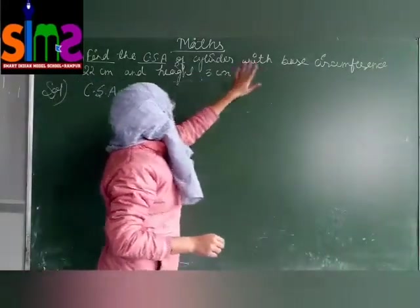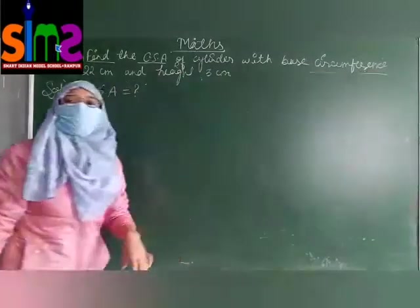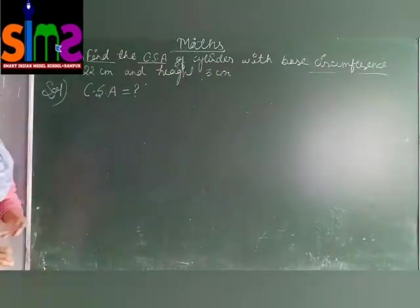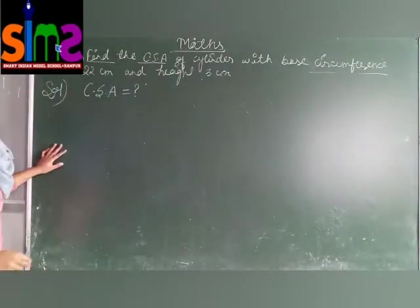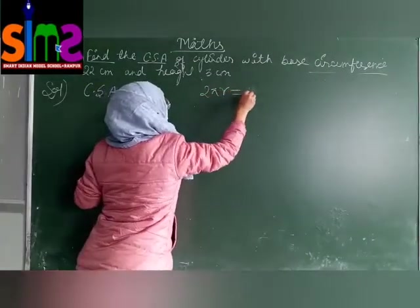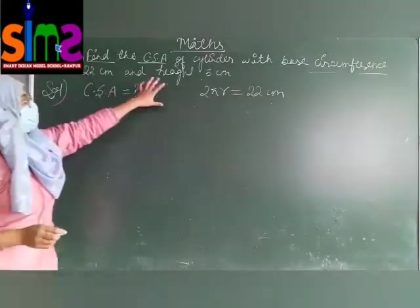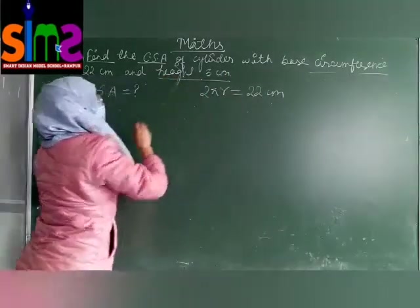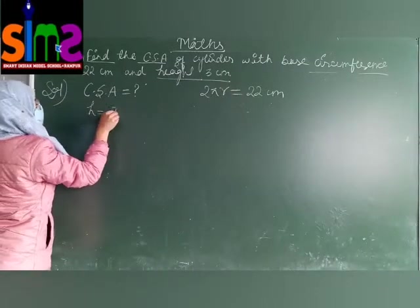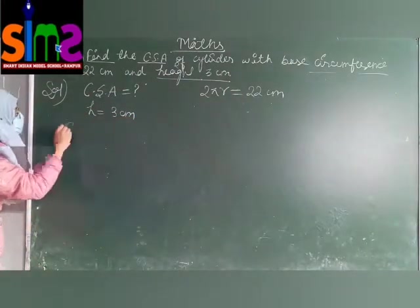Cylinder with base circumference 22 cm. We have given circumference. What is the circumference? 2 pi r. Yes, 2 pi r means circumference. We have given 22 cm. And height is 3 cm. We have given height 3 cm. We need to find out CSA.